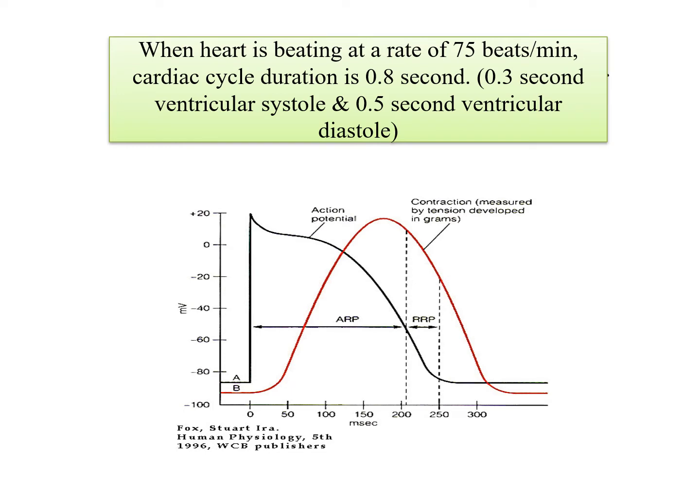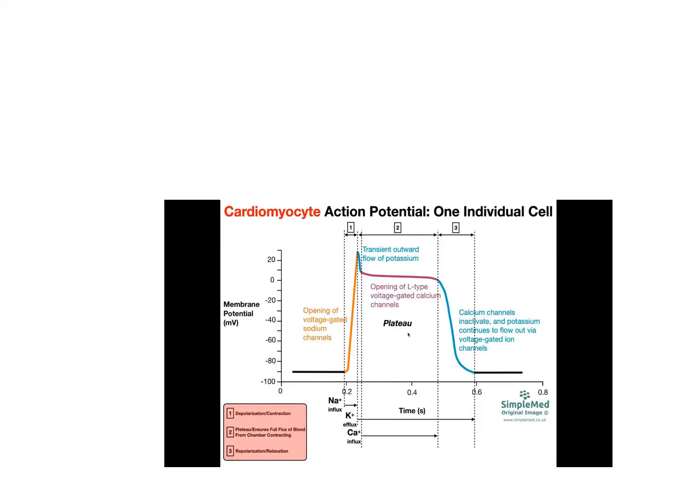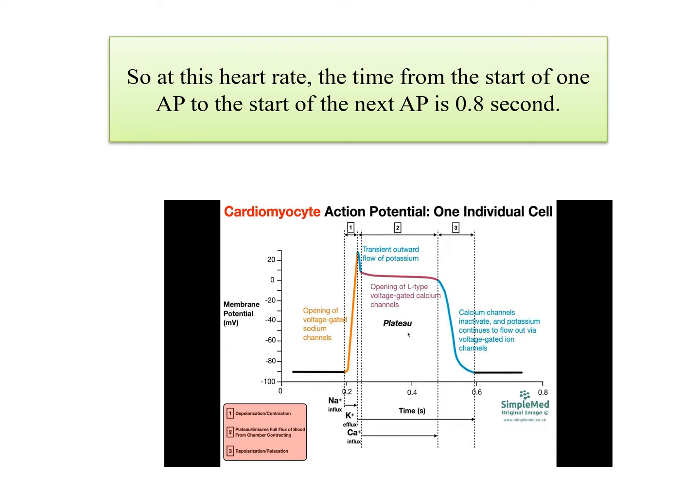When the heart is beating at a rate of 75 beats per minute, cardiac cycle duration is 0.8 seconds. Out of it, 0.3 seconds is for ventricular systole and 0.5 seconds is for ventricular diastole. So we can say that at this heart rate, the time from the start of one action potential to the start of the next action potential is 0.8 seconds. Only after 0.8 seconds, the next action potential will appear.